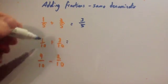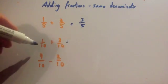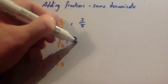Next one: one tenth plus three tenths. Well, one tenth plus three tenths would equal four tenths.